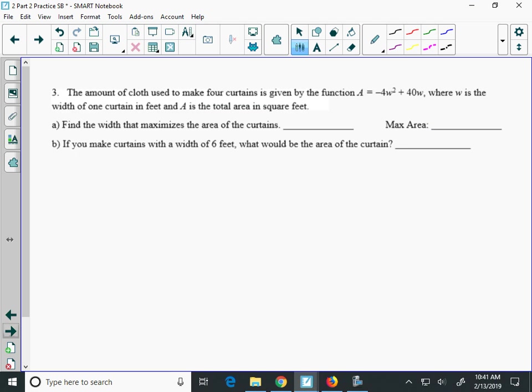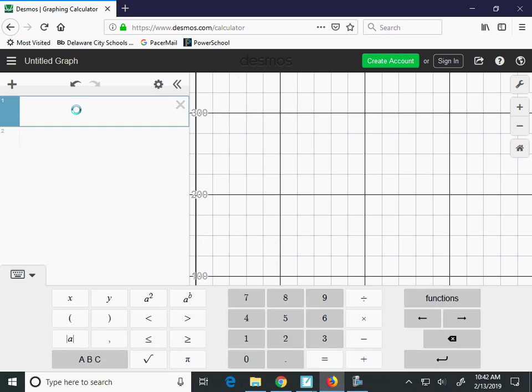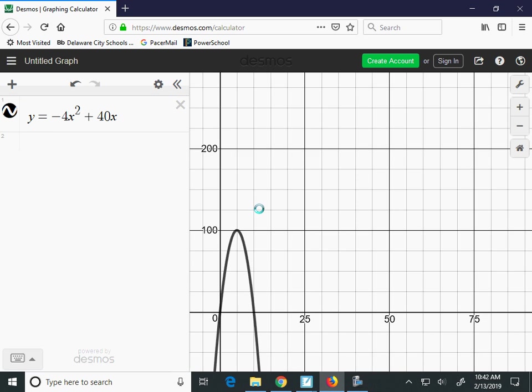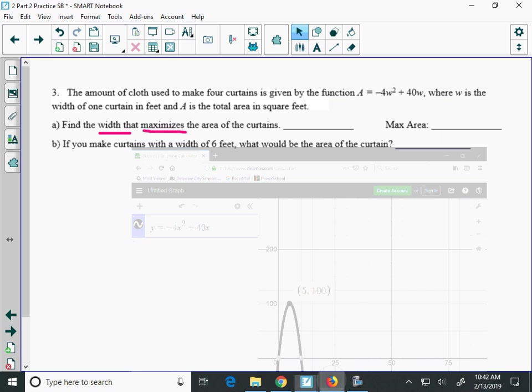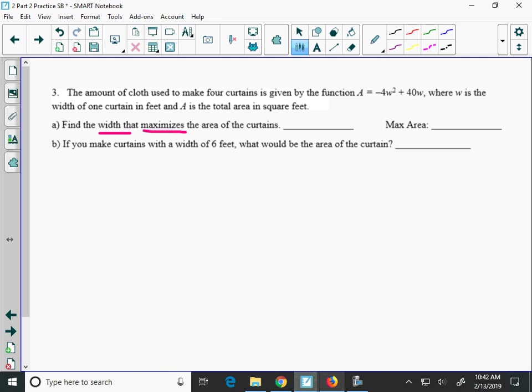Alright, finally, number 3, not multiple choice. The amount of cloth used to make curtains is modeled by A equals negative 4W squared plus 40W. W is the width, and A is the area. We want to find the width that maximizes the area. So when I'm finding the maximum again, I am finding the highest point. So we type this into Desmos. Y equals, and the equation, negative 4X squared plus 40X. Alright, my graph's there. It's really small, but I'm only looking for the maximum. So I just click on it, and I get the ordered pair 5, 100.